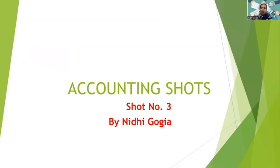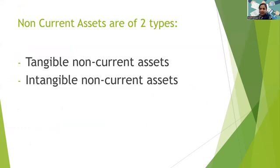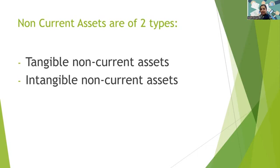So today we are going to do the terms. We stopped in accounting shot number two talking about the two types of assets. We have non-current assets and we have current assets, and we are going to carry on now with the classification of non-current assets. As a recap, assets are the items which any business owners own, or if they have the right to use something to generate future revenue, that's known as an asset. Assets are of two types: current assets and non-current assets. Current assets are the assets which you are going to use for less than one year.